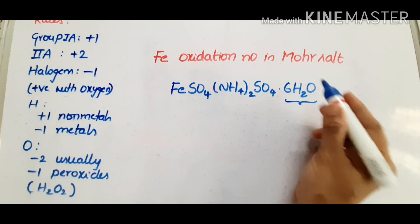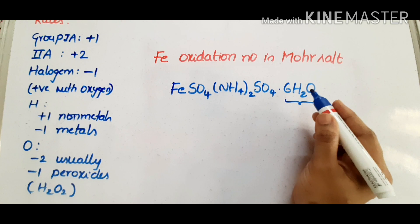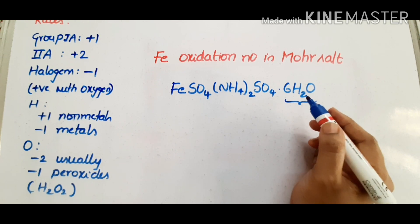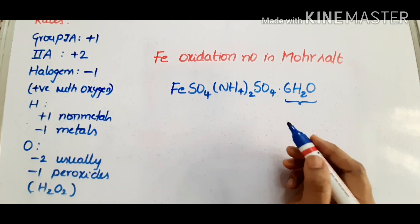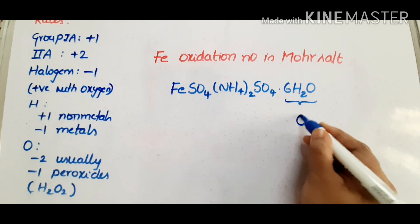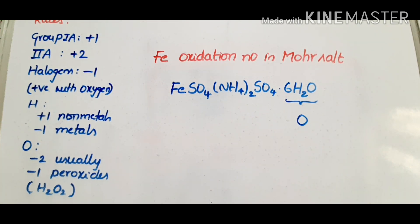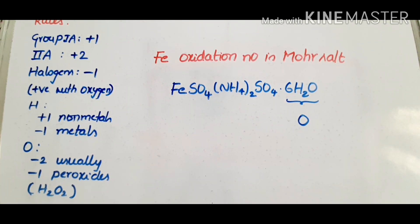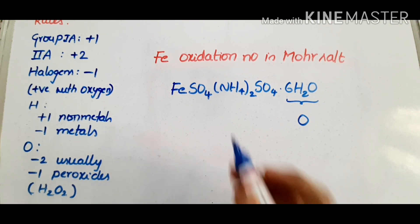This is a neutral compound. In neutral compounds, the sum of oxidation numbers is equal to 0. So for the whole compound, the sum is 0. Similarly, (NH4)2SO4 is also a neutral compound, so the sum of oxidation numbers is 0.